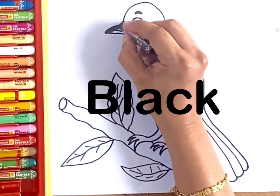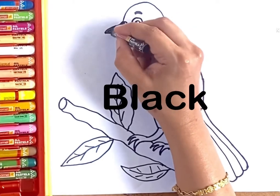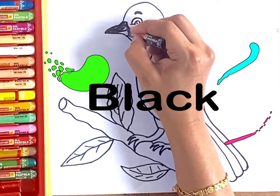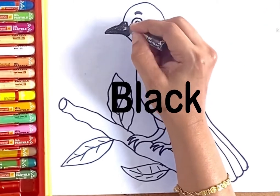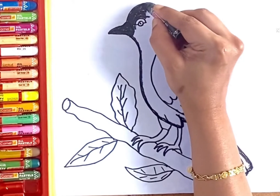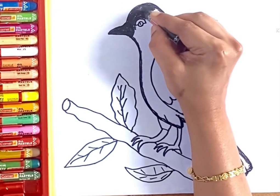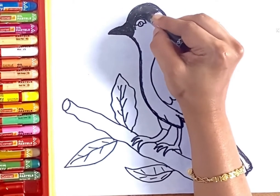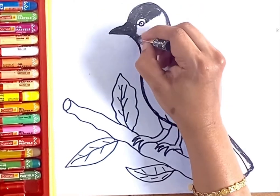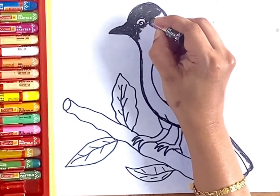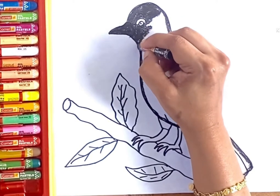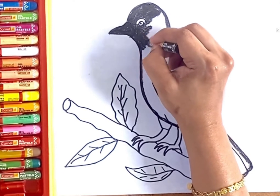Let's start coloring with black color. Today I am going to use oil pastel colors. As I always say, give the boundary first and then start filling the color so that the color won't go outside.